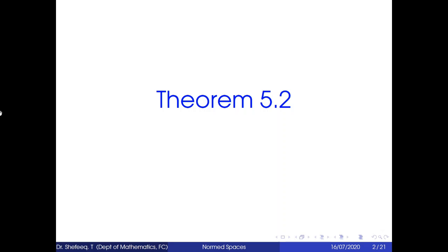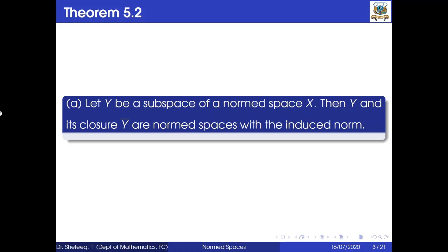Hi students, today we will discuss Theorem 5.2. This theorem has three parts. The first part is: let Y be a subspace of a normal space X, then Y and its closure are normal spaces with the induced norm.